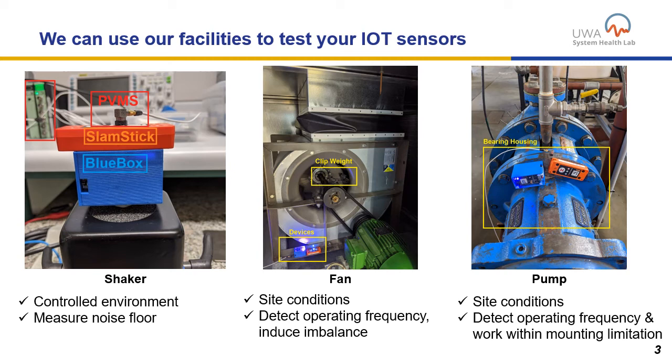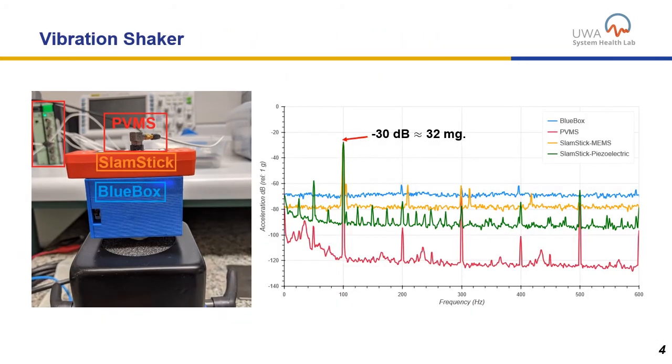For instance, we can put some clip weight in the fan to induce imbalance, or we can contaminate one of the bearings to indicate a damaged bearing and check the performance of these.